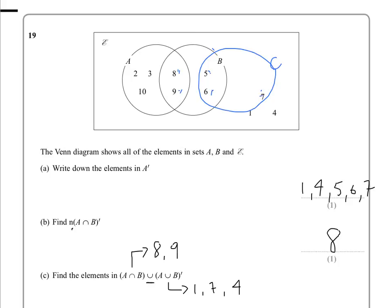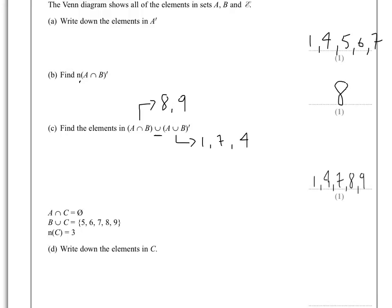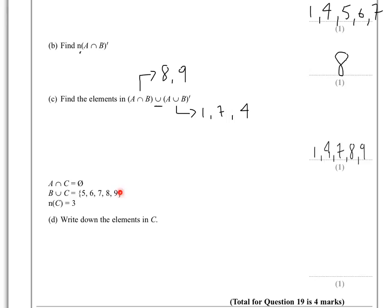So it gives us 5, 6, 7, 8, 9. And let's see if that's right. That's exactly what we need, 5, 6, 7, 8, 9.